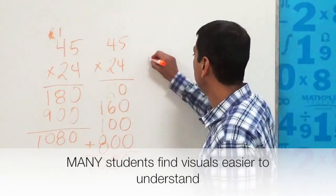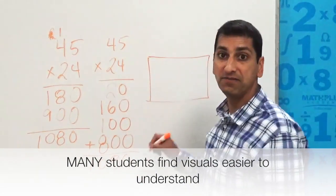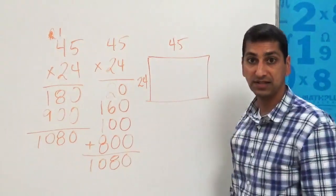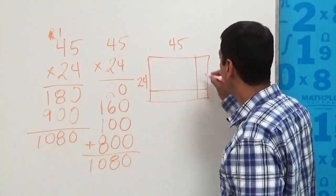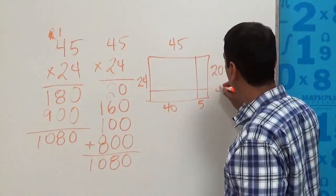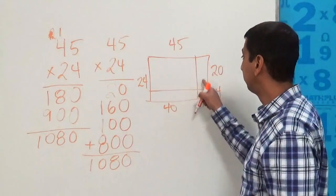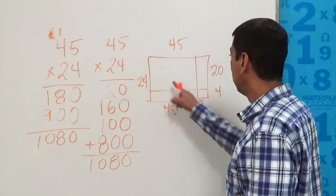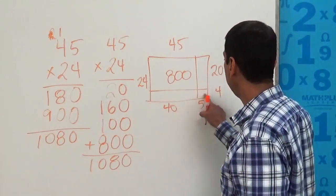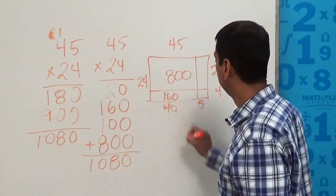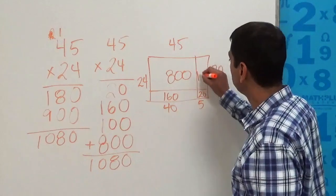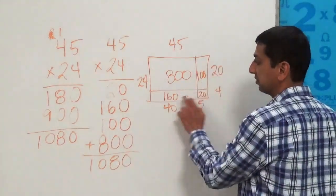We might even give them a visual picture of what's going on. When you multiply two numbers, you can think of that as the area of a rectangle. And this rectangle would be 24 units on this side and 45 units on that side. And if I break it up like this, and I imagine this to be 40 and 5, and this side to be 20 and 4, then I can compute the area of these four little internal rectangles. This one here is 20 by 40, which is 800. This one here is 40 by 4, which is 160. The little one is 5 by 4, which is 20. And this other vertical one here is 5 by 20, which is 100.